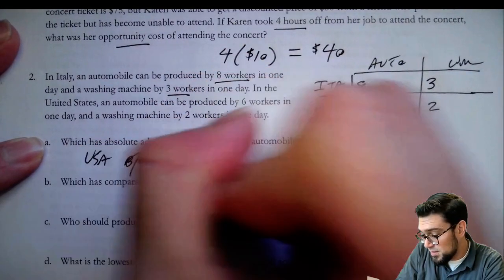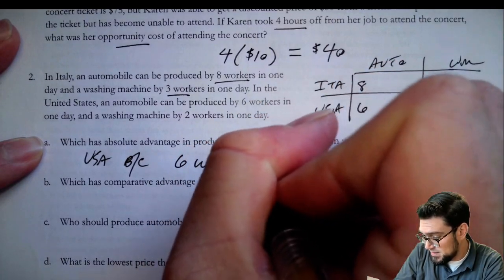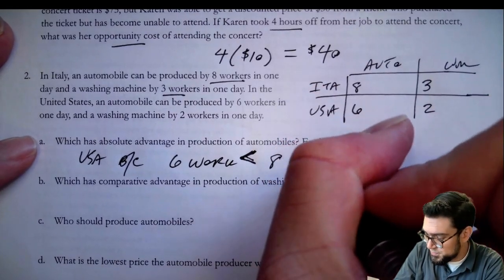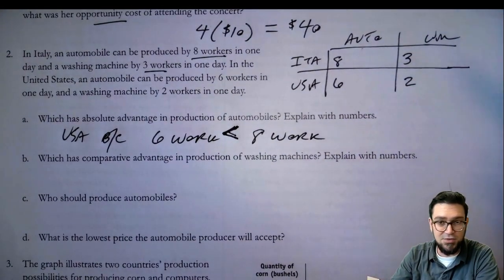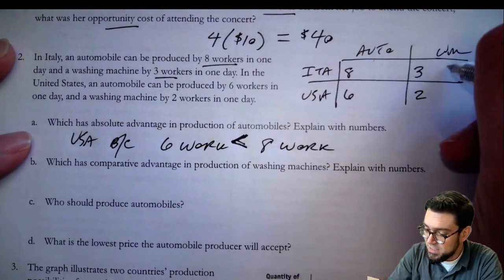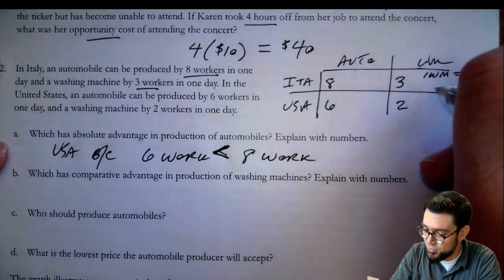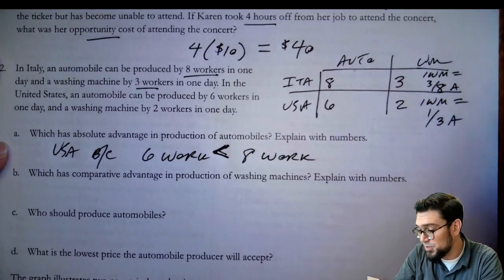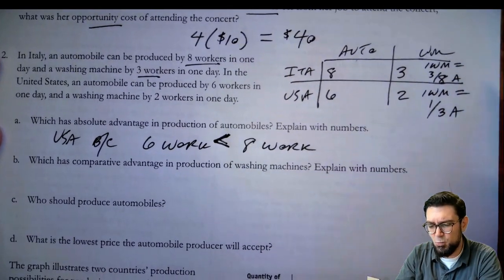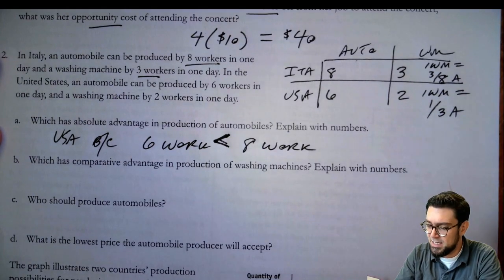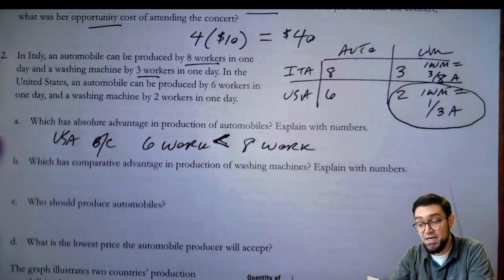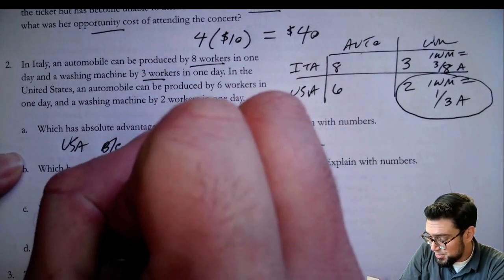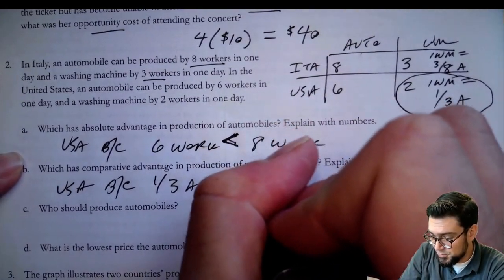USA has absolute advantage in automobiles because six workers is less than eight workers. For comparative advantage in washing machines: one washing machine costs three-eighths of an automobile for Italy. For the United States, one washing machine costs two-sixths, which is one-third of an automobile. One-third is smaller than three-eighths — just know that three-ninths would be one-third, so this is smaller than three-eighths. That means USA has comparative advantage in washing machines, because one-third of an automobile is less than three-eighths of an automobile.